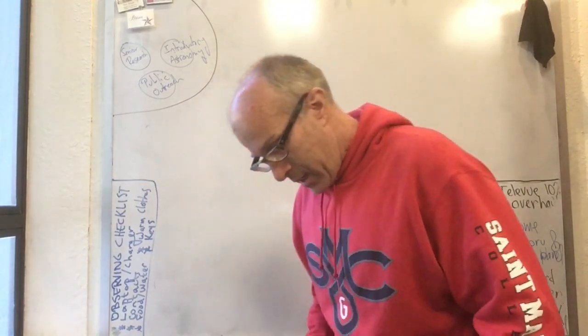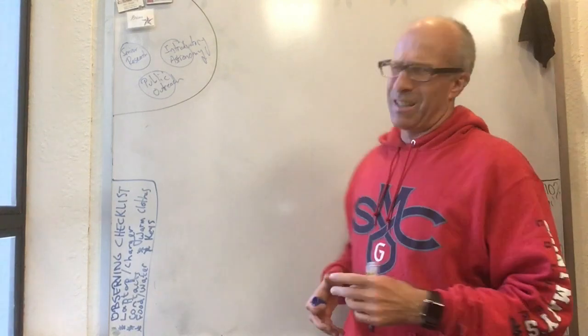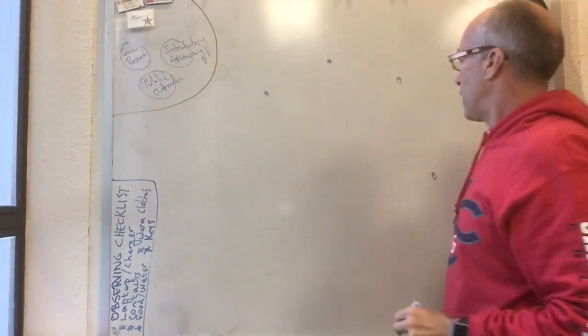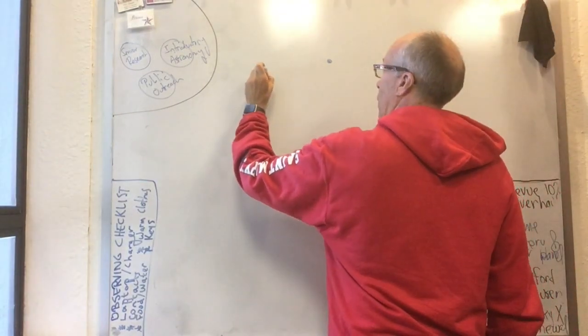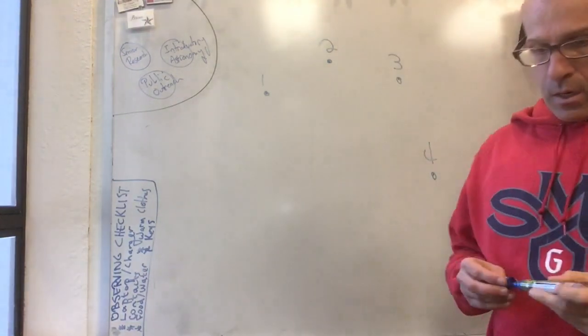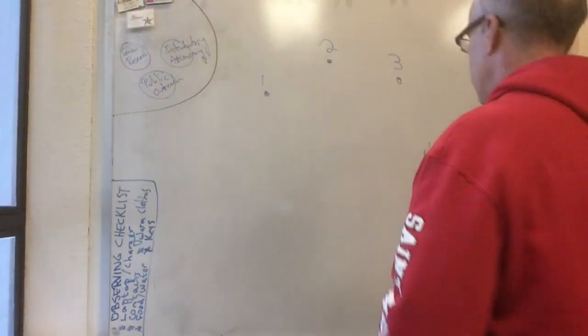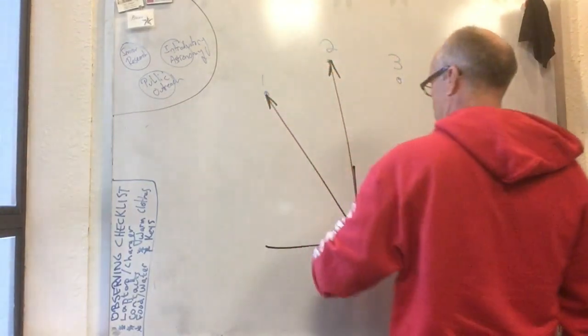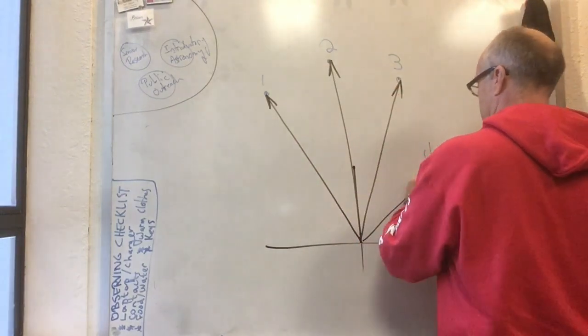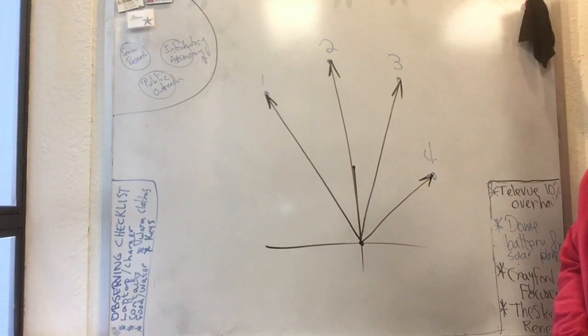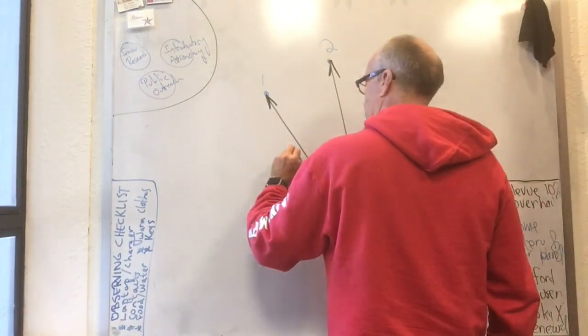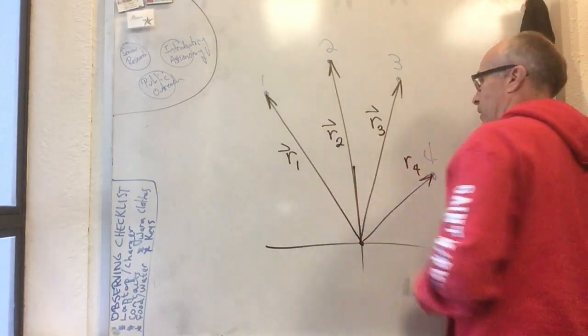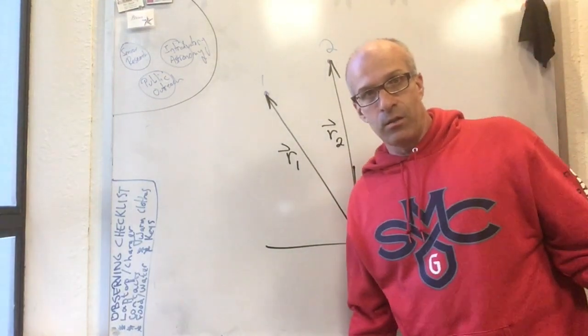Displacement is the difference between two vectors. If you have a particle that took some path like this, with points 1, 2, 3, and 4, and you've got some notion of a coordinate system down here, this is vector 1, vector 2, vector 3, and vector 4. Down here is the origin of our coordinate system. We write this as r1, r2, r3, and r4, and I can take the difference between any two of these vectors.